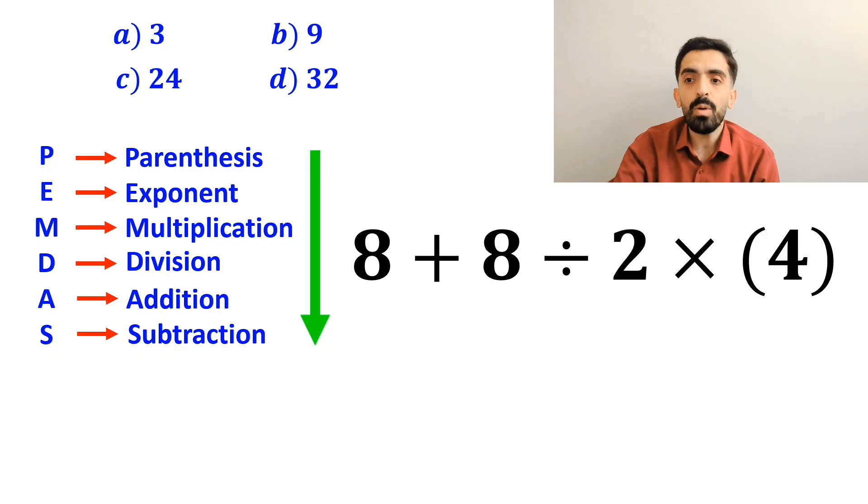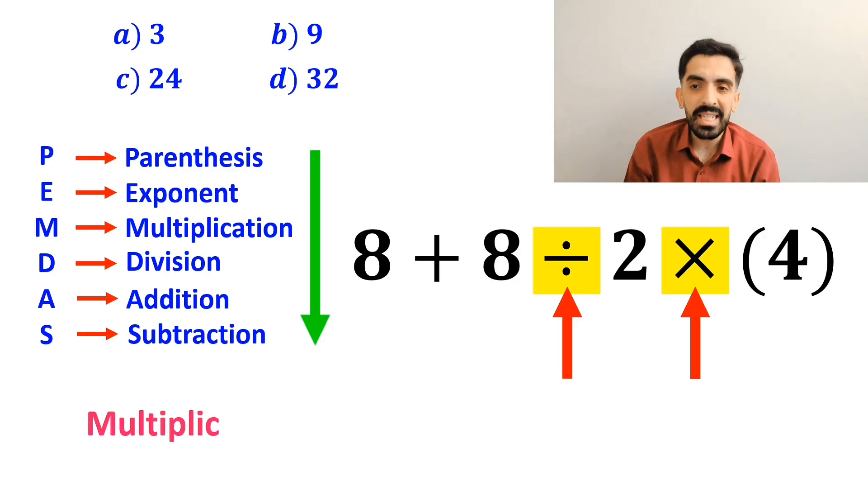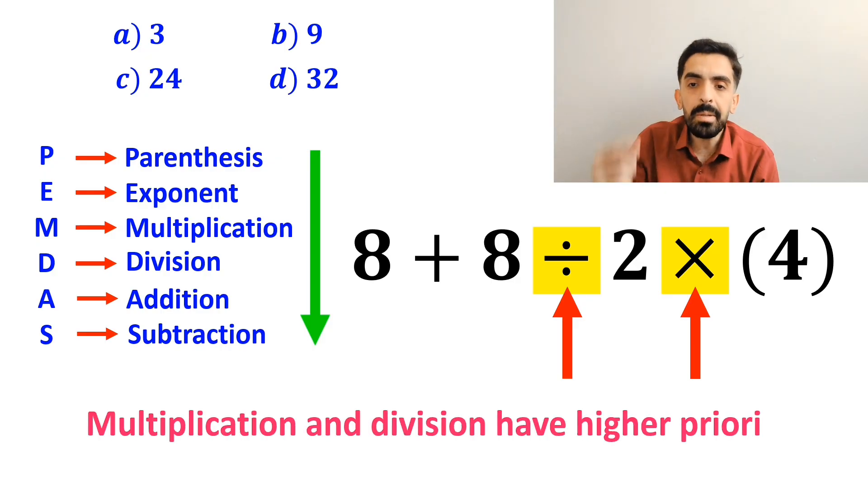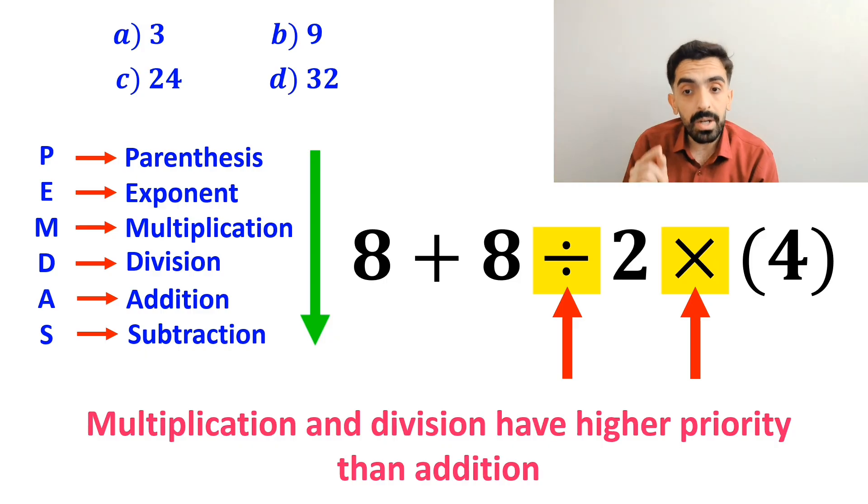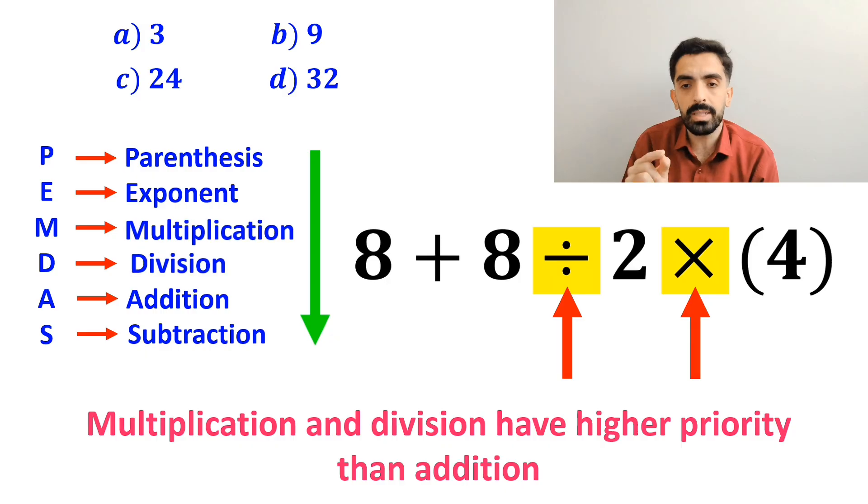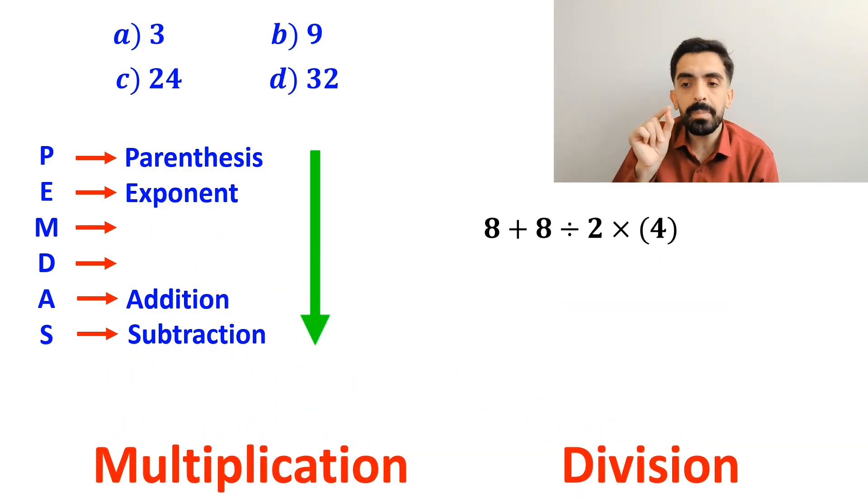In the next step, we need to handle the division and multiplication. Because multiplication and division have a higher priority than addition. However, it is very important to note that in the PEMDAS rule, multiplication and division have the same level of priority.